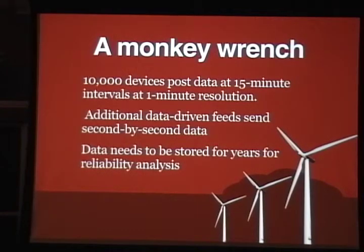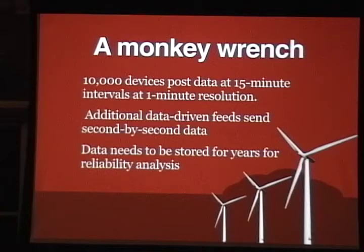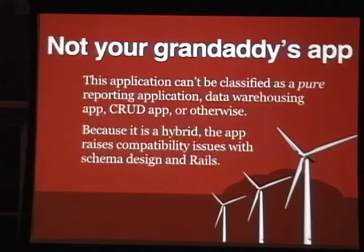One of the things we have to deal with is we've got several thousand — upwards of 10,000 inverters — solar power inverters that basically convert direct current energy to AC current energy, scattered across the U.S. These send in data feeds at various intervals: some at 15-minute increments with minute-by-minute data, some second-by-second, coming in batches. The data needs to be available for multiple years, so it's a fairly large installation and application.